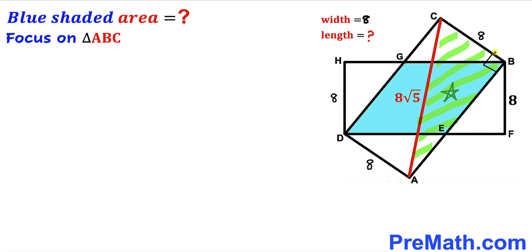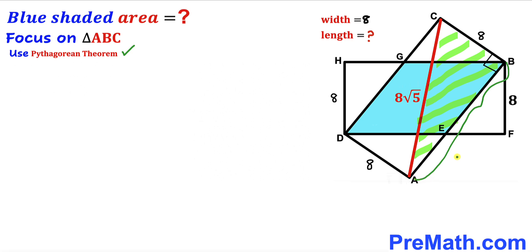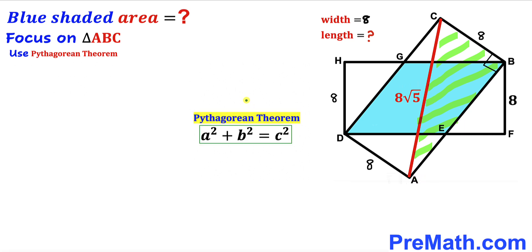Let's focus on right triangle ABC. We know this angle is 90 degrees since we are dealing with rectangles. We are going to apply the Pythagorean theorem on this triangle to calculate the length AB. The hypotenuse for this triangle is 8 times square root of 5, and the two legs are 8 units and AB.